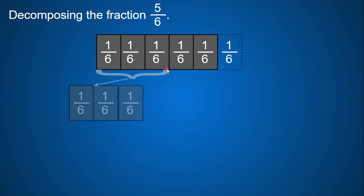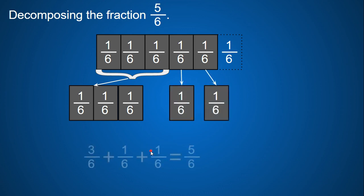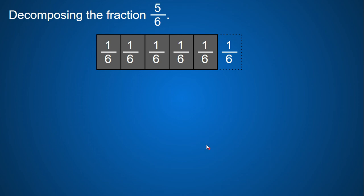And I can break it into three-sixths and break this into my unit fractions. So three-sixths plus one-sixth plus one-sixth will give me five-sixths.